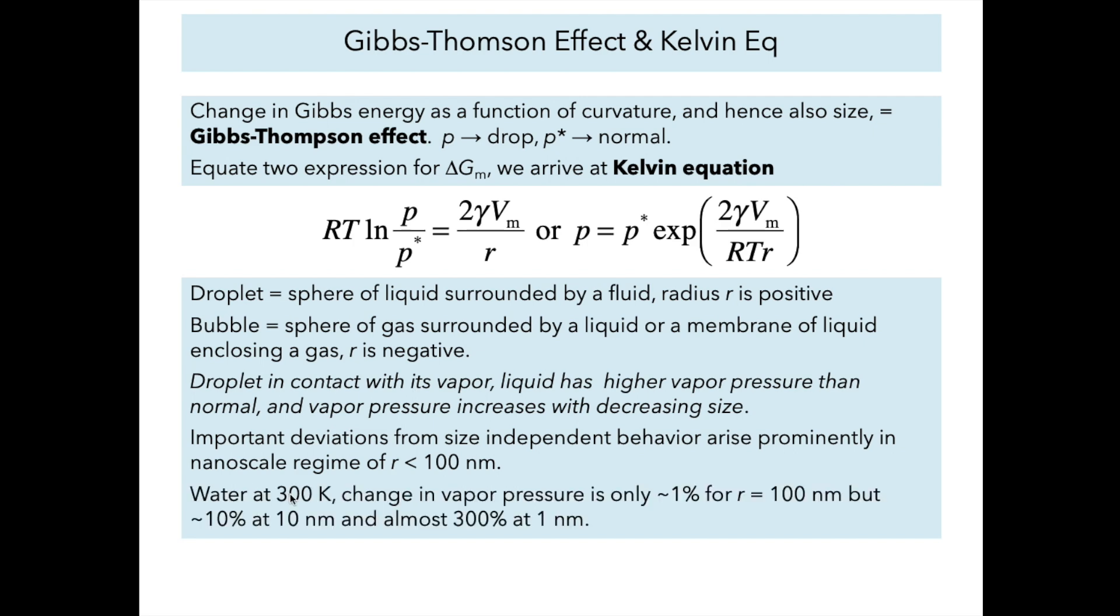Let's take the case of water at 300 Kelvin. When we get to 100 nanometer particles, we get a 1% change between the vapor pressure within the droplet and the normal vapor pressure. As the particle gets smaller, the deviations get bigger. It's about 10% at 10 nanometers, and it's almost a factor of 3 by the time we get to a 1 nanometer droplet.